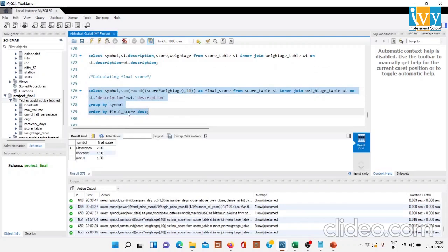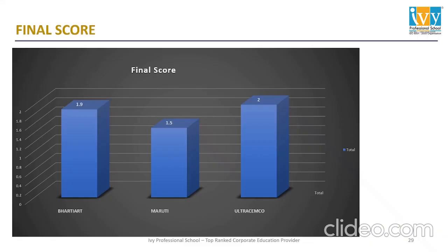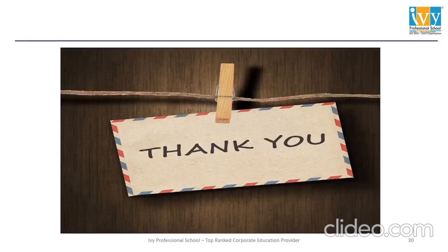We can now see the final scores of all companies. Ultratech Cement scored the highest at 2.0, Bharti Airtel scored second at 1.9, and Maruti Suzuki scored the least at 1.5. These are the final scores across all parameters. Similarly, we can rate any company on any parameters based on our needs. Thank you.